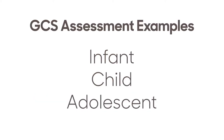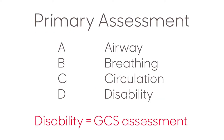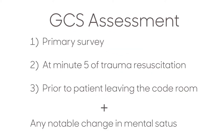The following are examples of how to perform a GCS assessment on an infant, child, and adolescent. The GCS is assessed during the primary survey. The GCS should be reassessed at minute five of the trauma resuscitation and again prior to the patient leaving the code room. Additional GCS assessments should be done if there is a notable change in mental status.